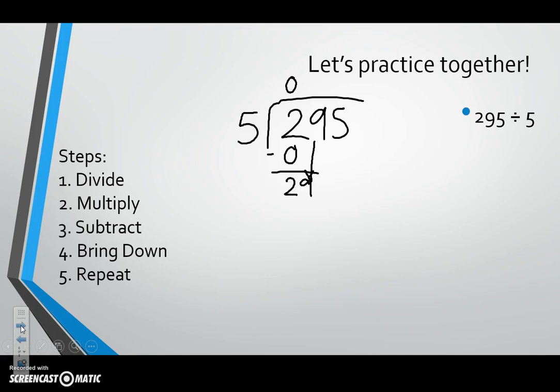How many times can five go into 29 without going over? We think about our basic facts and we know that five times five is 25, which is as close to 29 as we can get. So again, we need to multiply these two numbers. Five times five is 25. We subtract, leaving us nine minus five is four. Two minus two is zero.